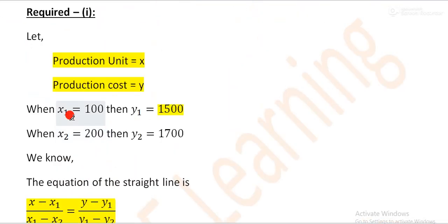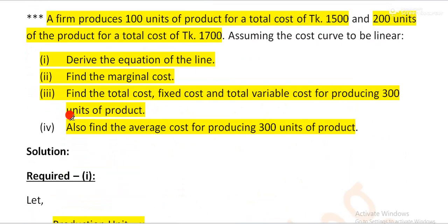Now we will see Required 3: find the total cost, fixed cost, and total variable cost for 300 units of product. So we will compute total cost, fixed cost, and variable cost.